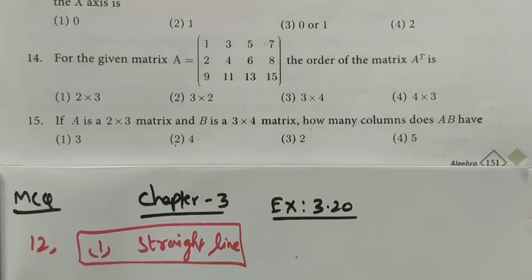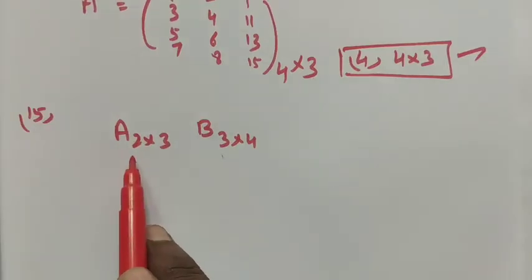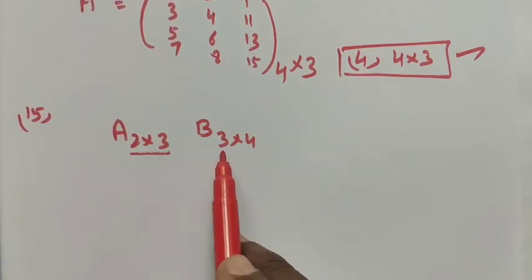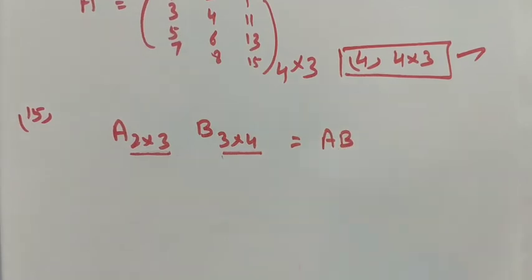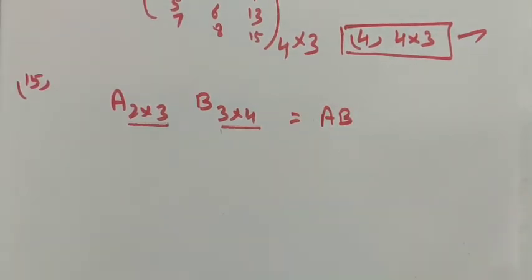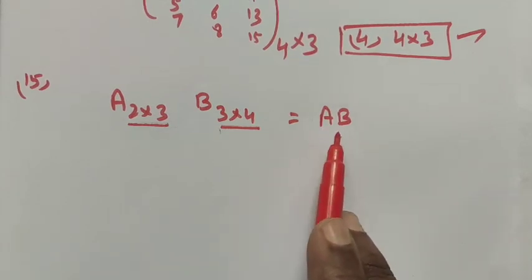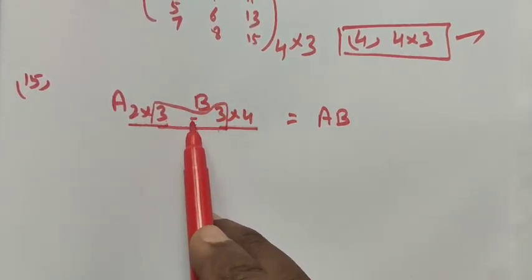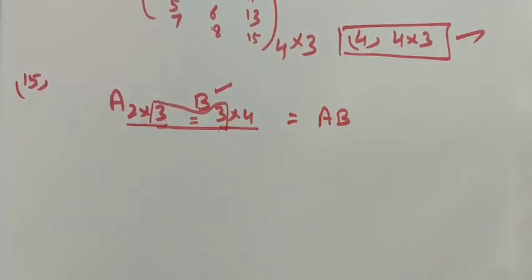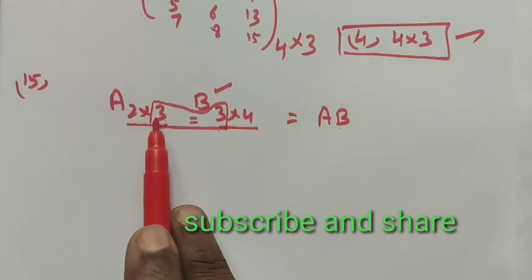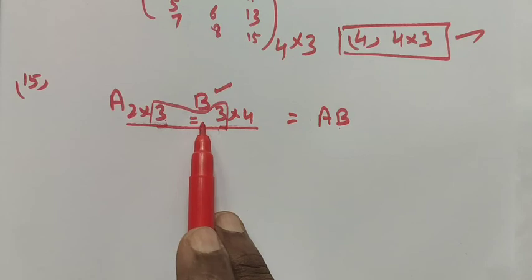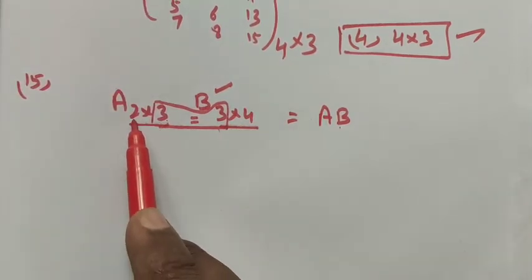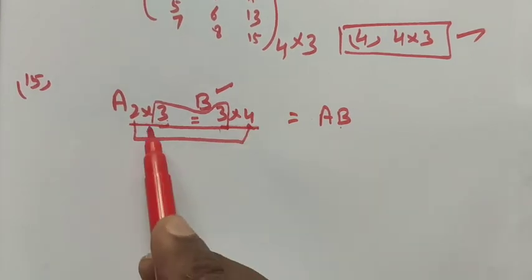Question number 15: if A is a 2 by 3 matrix and B is a 3 by 4 matrix, how many columns does AB have? Matrix A has order 2×3 and matrix B has order 3×4. For multiplication, the number of columns in the first matrix must equal the number of rows in the second matrix. Here, A has 3 columns and B has 3 rows, so the condition is satisfied and AB exists with order 2 by 4.